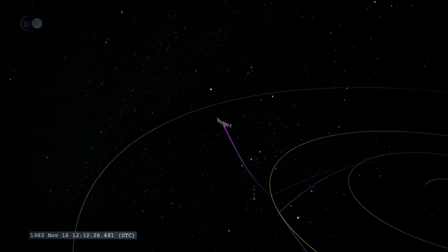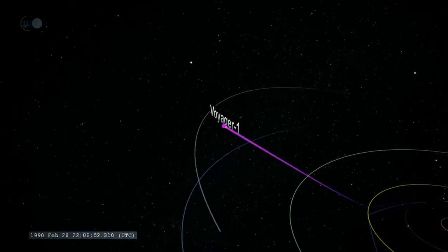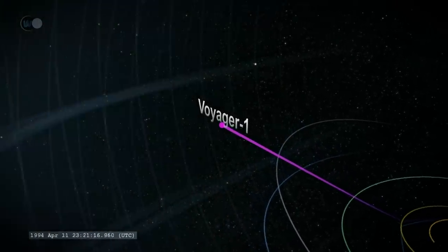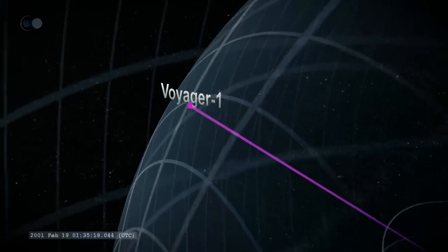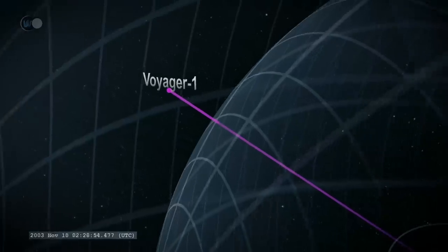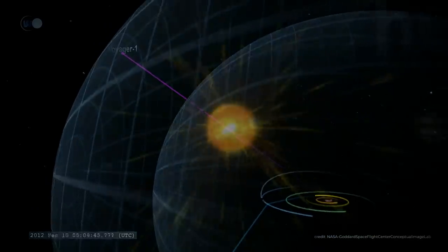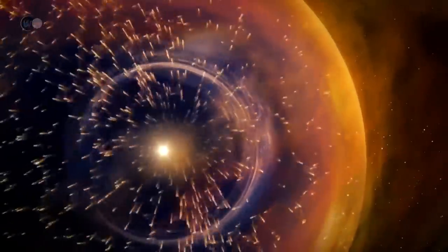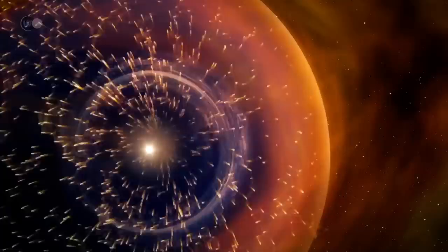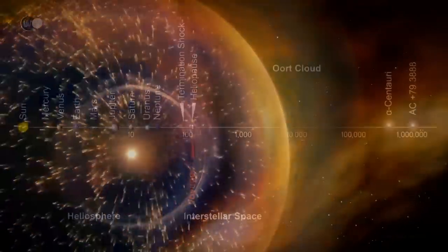NASA's Voyager 1 spacecraft, launched in 1977, took over 30 years to reach the edge of the heliosphere, despite reaching speeds of 61,500 kilometers per hour, or 38,000 miles per hour. This marks the limit beyond which the Sun's magnetic fields dissipate. However, if we consider that the boundary of our solar system lies at the point where the Sun's gravitational influence stops, Voyager 1 would have to pass through the Oort cloud before it could reach interstellar space.